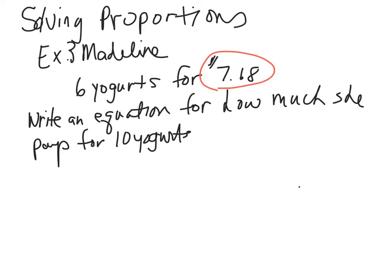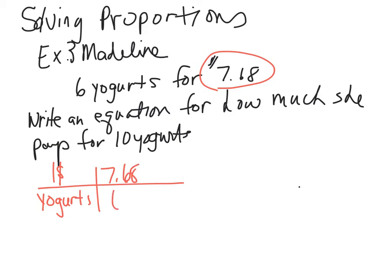We're going to set it up across with labels — the cost in dollars and the number of yogurts. The cost is $7.68 for six yogurts.